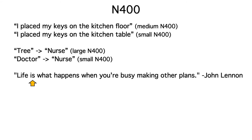The next word, is, is a little more predictable and would generate a smaller N-400. By the time you've read life is what happens, when is pretty predictable and would generate a smallish N-400. And by the time you get to the end of the sentence, plans is highly predictable and would generate very little N-400.